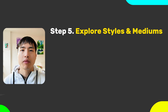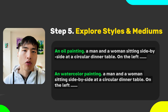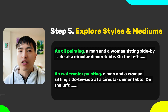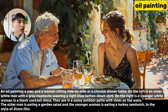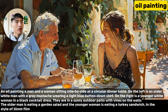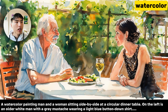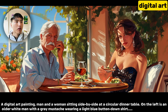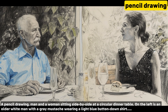It's easy to switch up the medium that the image is generated in — it usually works better if you add it to the start of the prompt. We can use oil paints, which have rich bold colors and a wide range of textures; watercolors, which are more transparent with less saturated colors; digital art that you may have seen on Instagram; pencil drawings; and other styles you might think of.